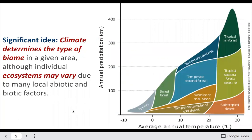Climate is going to be the major determinant in the type of biome that you have in a given area, and then ecosystems will vary due to local abiotic and biotic factors, but biomes are our broad categories for different types of environments. These include tropical rainforests, temperate rainforests, seasonal forests which may lose their leaves, boreal forests up in the arctic, tundra above tree line, deserts, and grasslands.